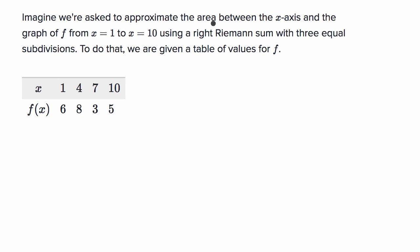Imagine we're asked to approximate the area between the x-axis and the graph of f from x equals one to x equals 10 using a right Riemann sum with three equal subdivisions. To do that, we are given a table of values for f. Pause the video and see if you can come up with an approximation using a right Riemann sum with three equal subdivisions.